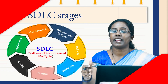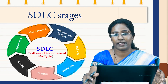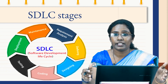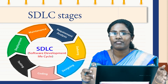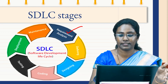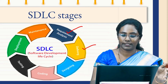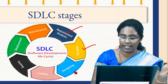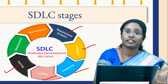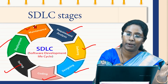This entire process of software development life cycle is divided into seven stages: requirement analysis, defining the requirements, designing, coding, testing, deployment, and maintenance.